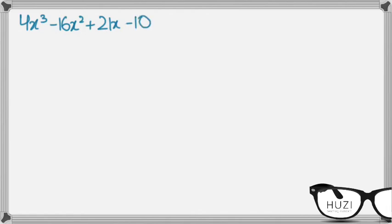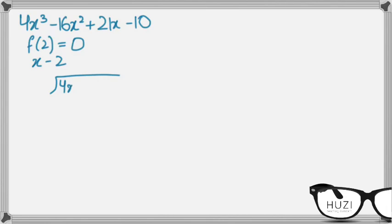Now let's solve the cubic equation. I'll plug in 2: 2 cubed is 8, 4 times 8 is 32, minus 16 times 4 is minus 64, so 32 minus 64 is minus 32, plus 42 is 10, and 10 minus 10 is 0. So x minus 2 is a factor of the cubic. Now dividing 4x cubed minus 16x squared plus 21x minus 10 by x minus 2.